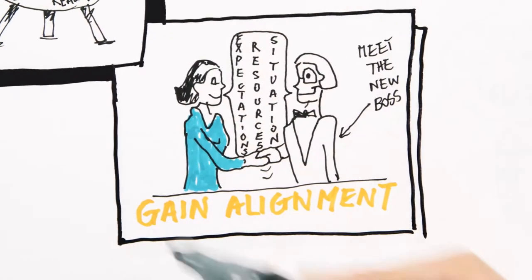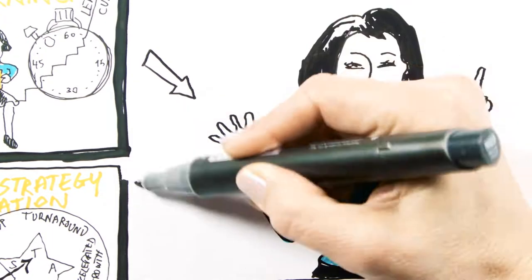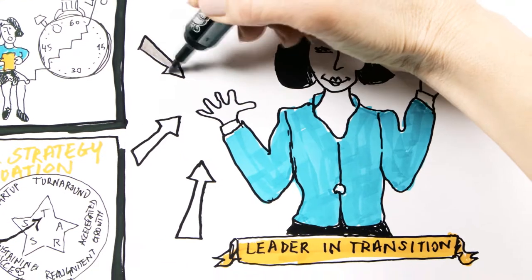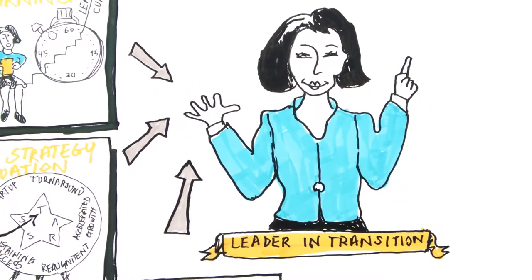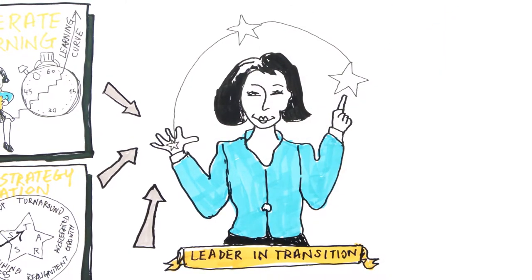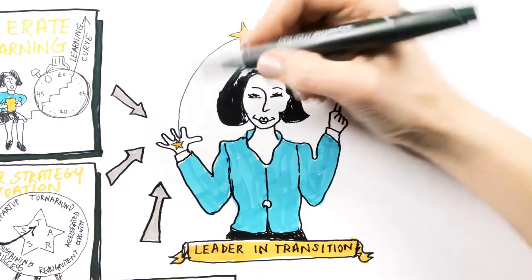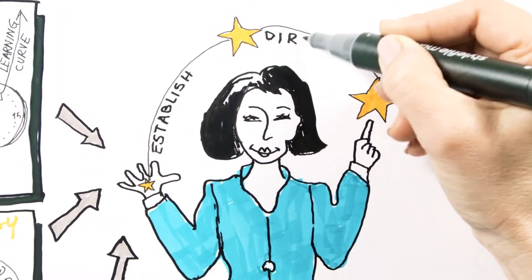As you learn more about your new role, you can establish direction for yourself and your team. You need to provide your people with clarity about what needs to be done, how it will be accomplished, and why they should get excited about doing it. This means identifying your priorities, defining your strategy, and creating your vision. Doing so is the essence of establishing direction for your new organization.